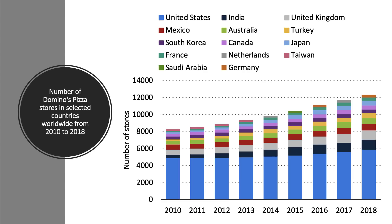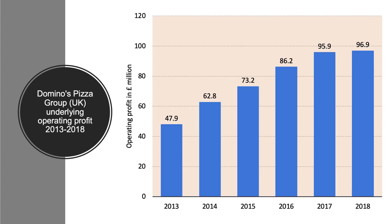Domino's is of course a global brand, essentially a global franchise with many thousands of stores around the world, including the UK, and is growing - dominated of course in the United States. Looking at the UK figures for context: last year, Domino's Pizza Group, a franchise operating within the master franchise of the global Domino's brand, made an operating profit of just under £100 million. The rate of growth of profit has been very strong in recent times - more than double their profits since 2013.